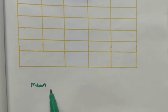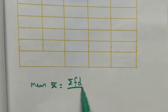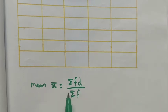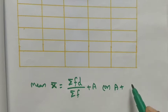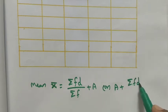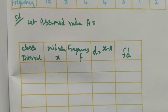The formula for the assumed mean method is: x̄ = a + (Σfd / Σf). We can write it as a plus summation fd divided by summation f. Either form is the same. Now we proceed to find the answer.